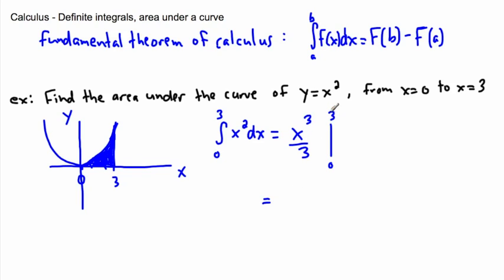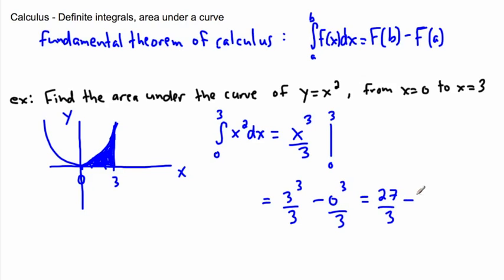We evaluate the antiderivative at b first — b is 3 — so it'll be 3 cubed over 3. Wherever I see an x I replace it with this value. Then I subtract the antiderivative at a, where a is 0, so it'll be 0 cubed over 3. Now, 3 cubed is 27, so it's 27 over 3, minus 0 cubed over 3 which is 0. So that's just 27 divided by 3, which is 9. The area under this curve from 0 to 3 is precisely 9 — not 9 point something, exactly 9.